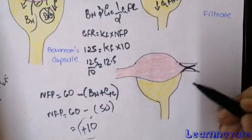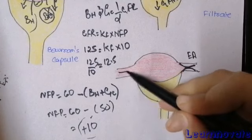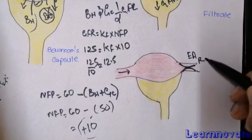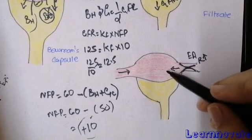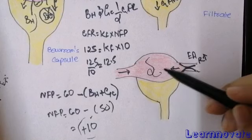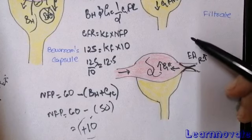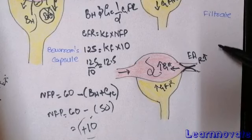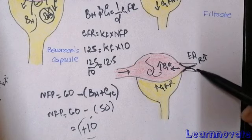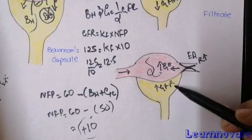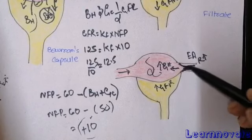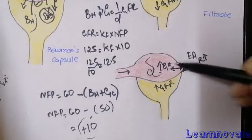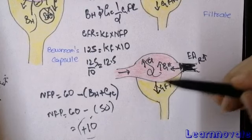The second condition is obstruction at the efferent arteriole. With normal afferent arteriole inflow and normal hydrostatic pressure, when there is an obstruction or increased resistance at the efferent arteriole, there will be a backflow of blood into the glomerular capillary. This increases glomerular hydrostatic pressure and ultimately increases GFR. However, remember the biphasic effect: mild constriction of the efferent arteriole increases glomerular hydrostatic pressure and increases GFR. But with severe or complete blockage of the efferent arteriole, GFR decreases because there is no pressure coming through and oncotic pressure increases as proteins accumulate.